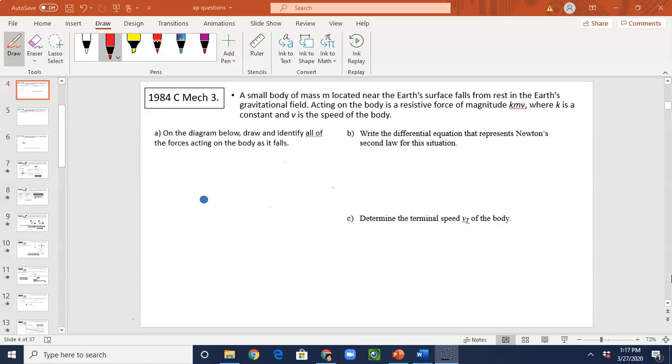A small body of mass M located near the Earth's surface falls from rest in Earth's gravitational field. Acting on the body is a resistive force of magnitude KMV where K is constant and V is the speed of the body.